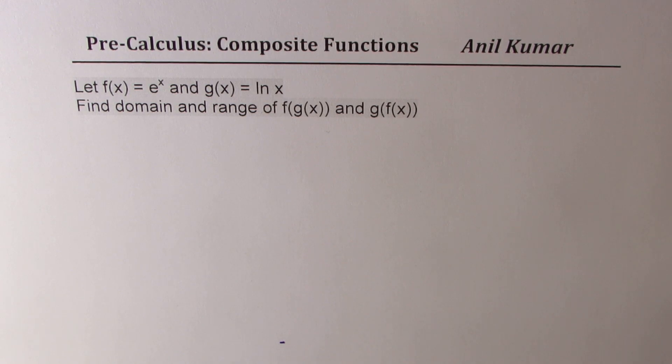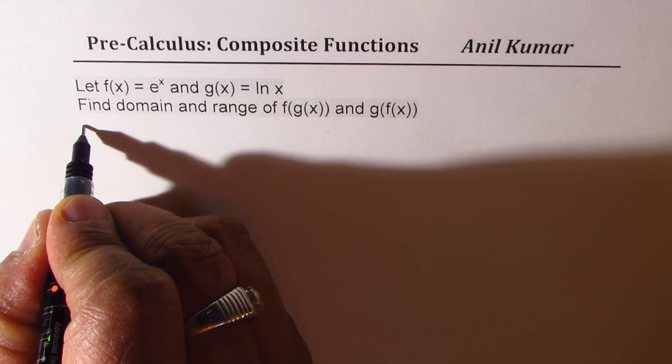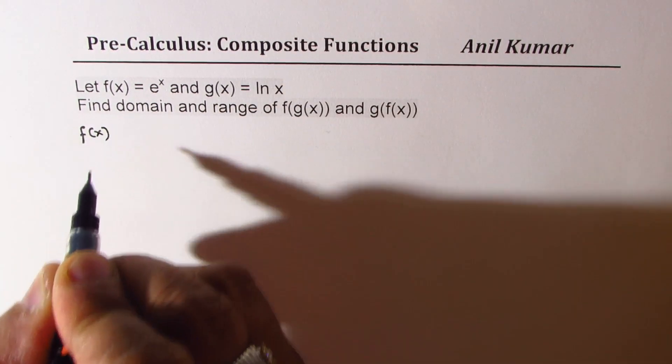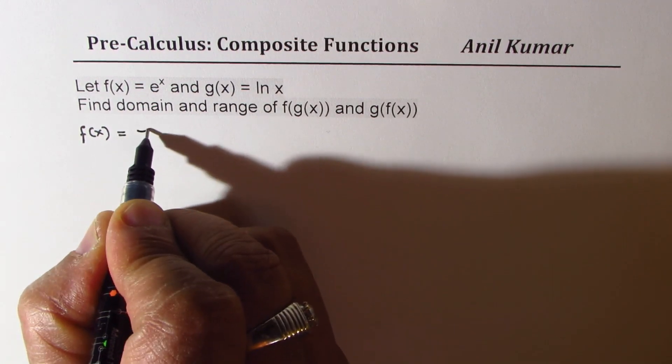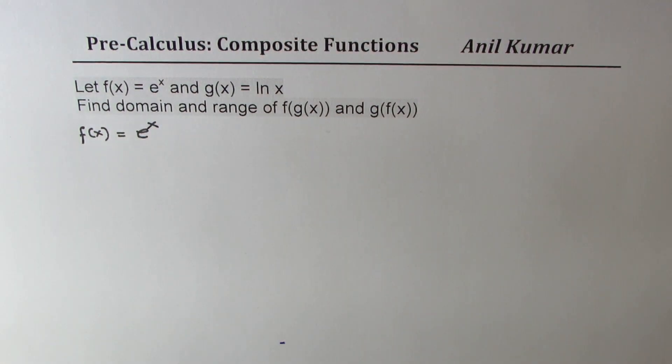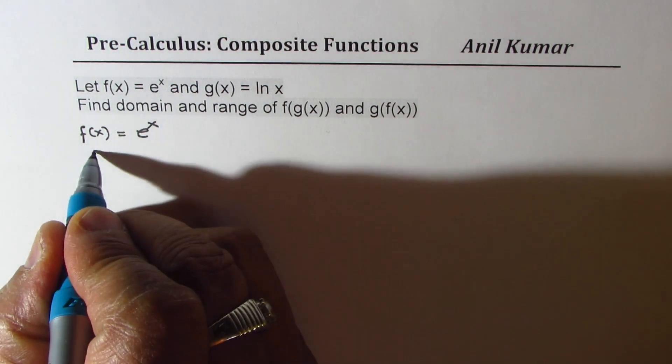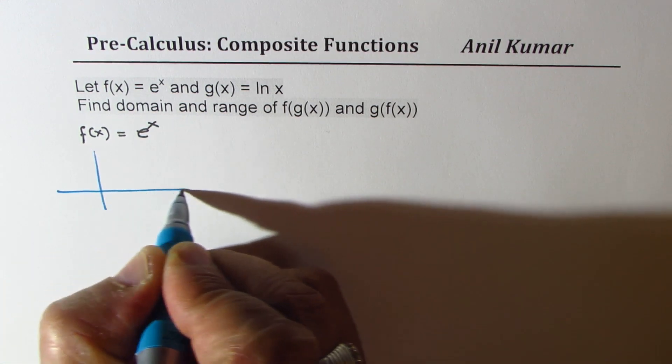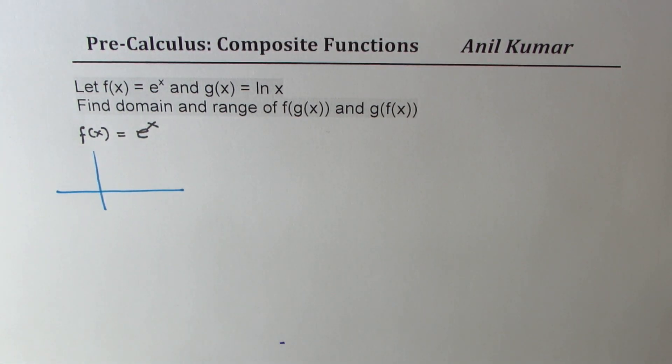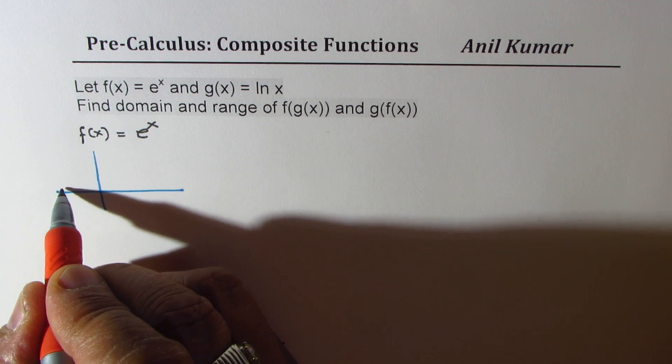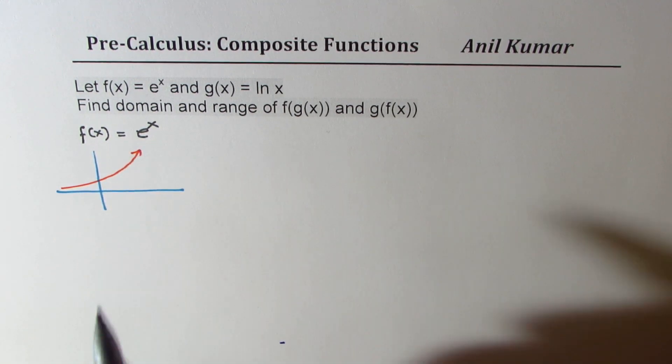Let's try to understand the situation. Let's first talk about the two functions we are given. f(x) equals e to the power of x. If you sketch this function, you get something like this. The exponential function is always greater than zero, domain is all real numbers.